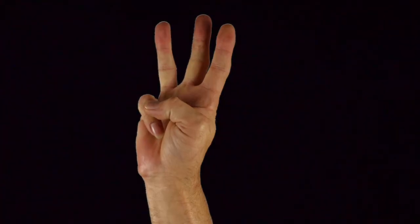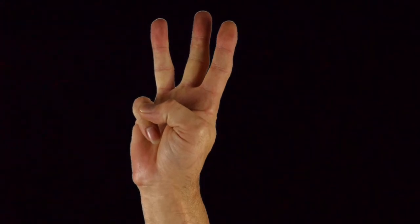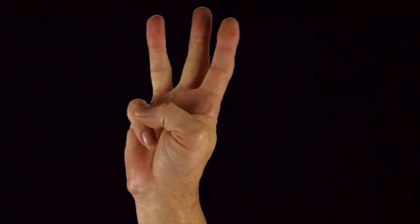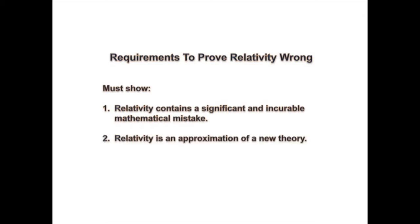Last week, in episode two, we outlined three specific requirements that must be met by anyone challenging Einstein's work. There I said that a successful challenge must meet three requirements. The challenge must show that relativity is mathematically flawed, relativity is an approximation of another theory, and at least one case where relativity fails to work properly.